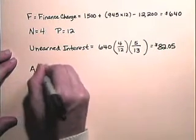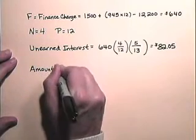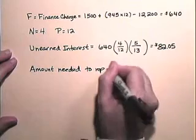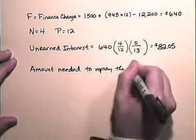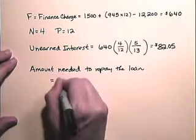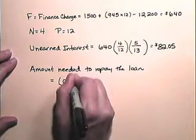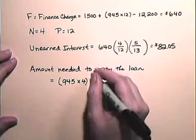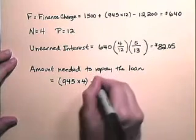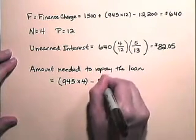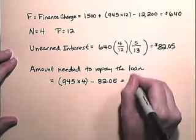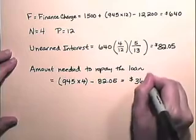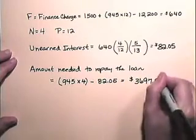So the amount needed to repay the loan is $945 for each payment for the next four payments, subtract the unearned interest, which gives us a repayment value of $3,697.95.